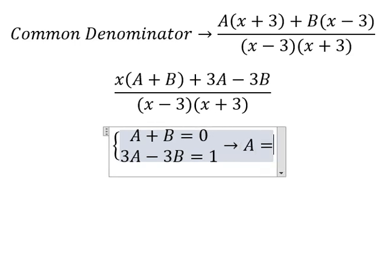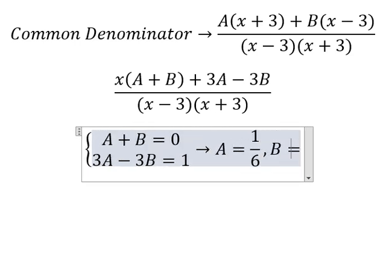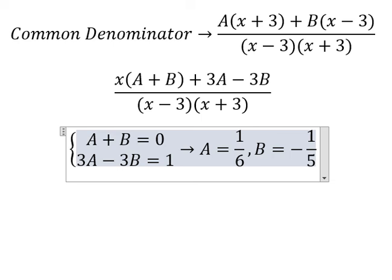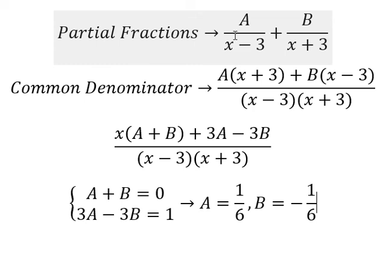So A equals to one over six, B equals to negative one over six. So we put A and B go back in here.